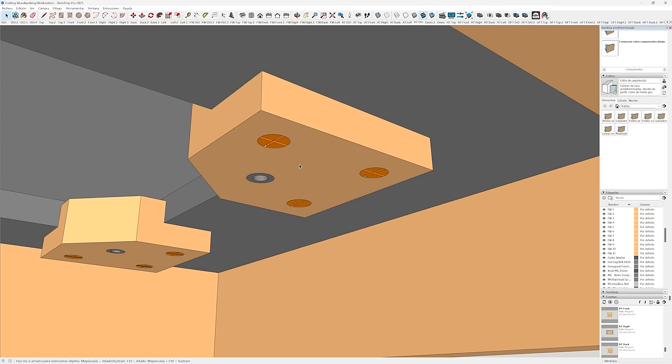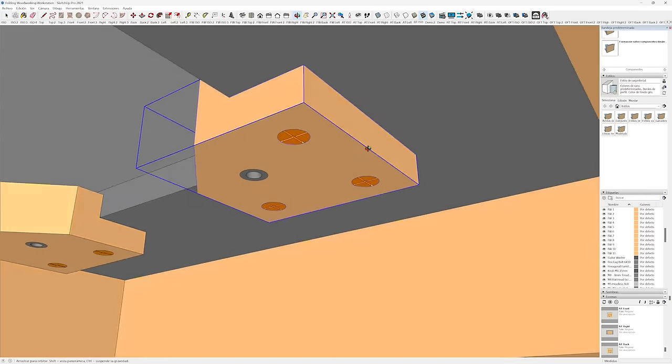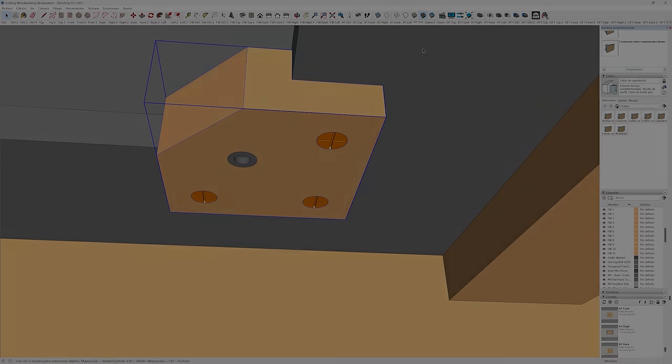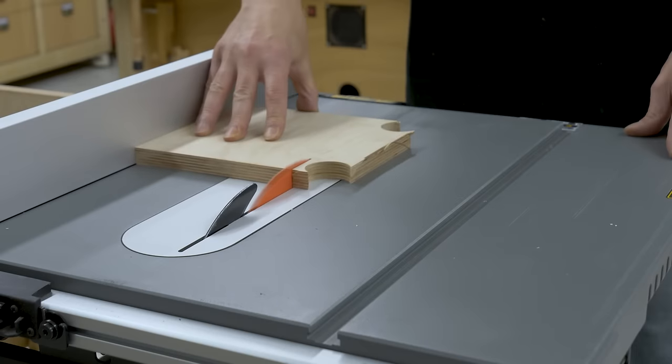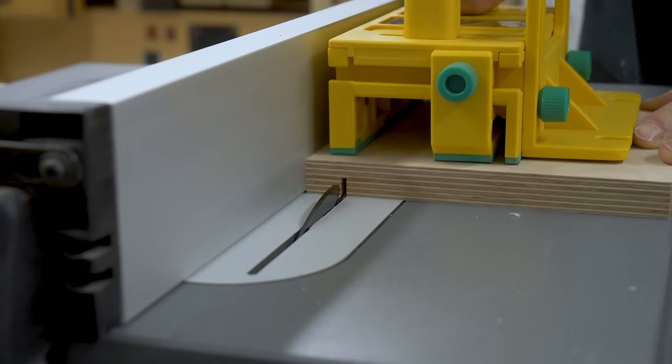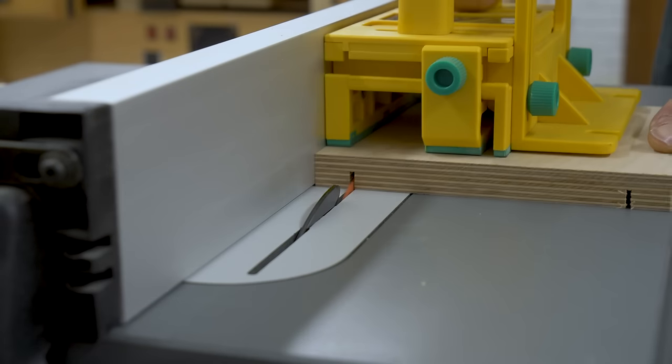Now, with some leftover board, I'll make the four parts that will allow me to fasten the insert plate to the work table. These parts are quite small, so as a precaution, I'll machine them in a bigger piece before cutting them to size.